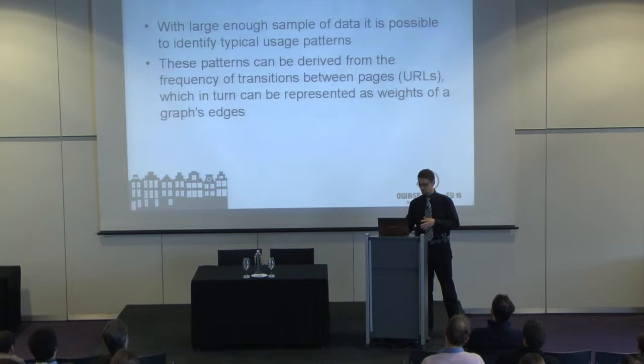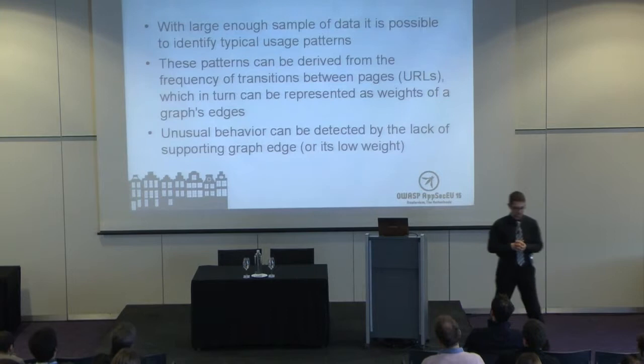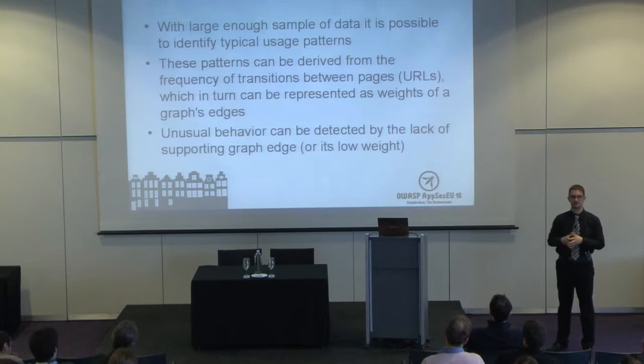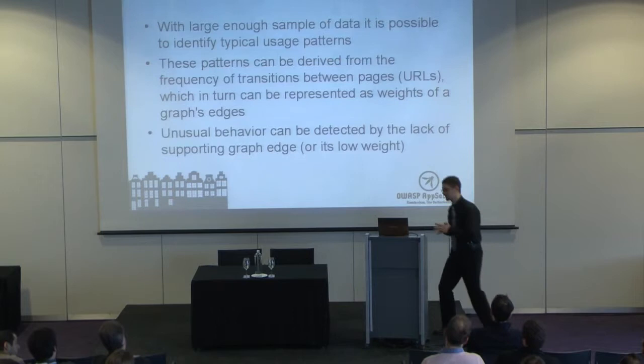My assumption was that with a large enough sample of data, it would be possible to identify usual patterns, and then we can spot the unusual ones because they differ from the usual ones. If we add one to the weight of an edge of the graph every time a user traverses a certain path, in a short time we'll have a graph that holds information about which paths are used often and which are used very rarely or just once.